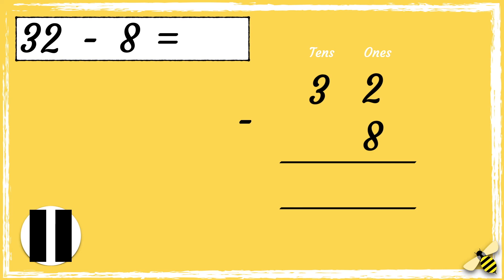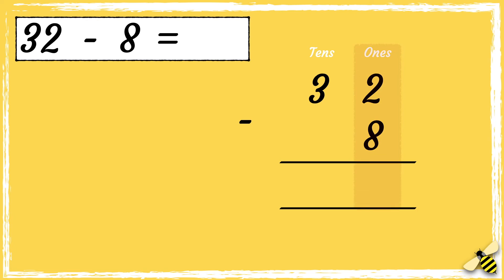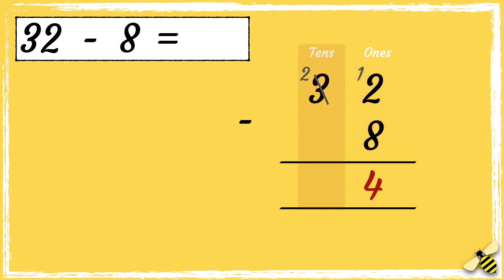Pause the video to give you time to work out the answer. Press play when you're done. We start from the right hand side, so we're starting with the ones. We can't subtract eight from two, so we need to borrow a ten from the tens column. If we borrow a ten, three tens becomes two tens. So now we have 12 take away eight, which is four. Now we need to subtract the digits in the tens column, so we have two take away zero, which is two. So we have two tens and four ones, so the answer is 24.